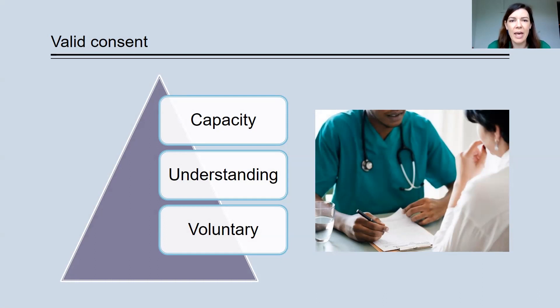Capacity means that the research participant can understand the nature of the research, understand the sort of decision they're being asked to make. Importantly, to understand the consequences of participating or not participating in the research, that they're able to communicate their wishes and their concerns, and that they can reason, they can act rationally. So the first requirement is that the potential participant has capacity to make that decision about research participation.